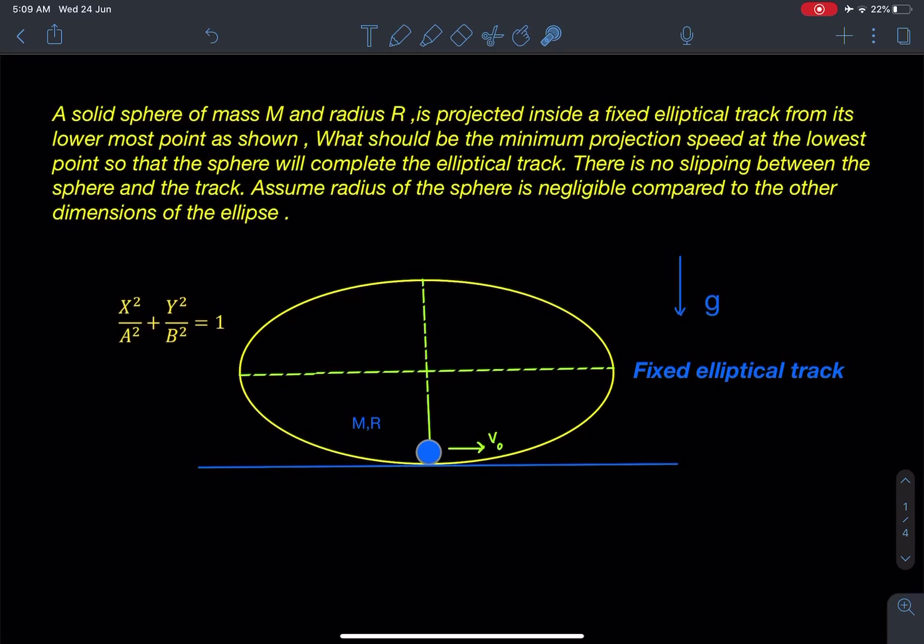There is no slipping between the sphere and the track. Assume radius of the sphere is negligible compared to the other dimensions of the ellipse. So here, as you can see, this elliptical track is given which is fixed, and there is a small sphere, a small ball, which is placed at the bottom of this ellipse.